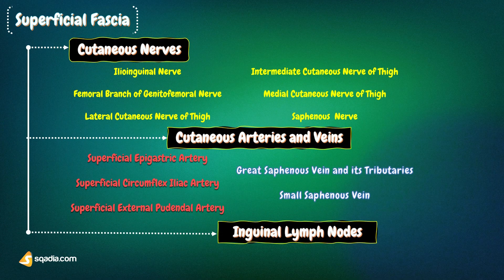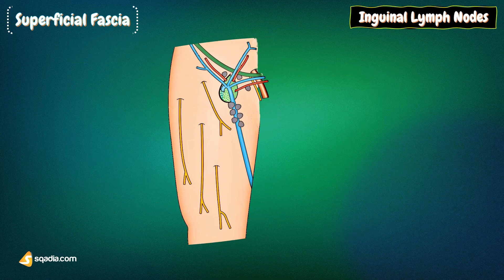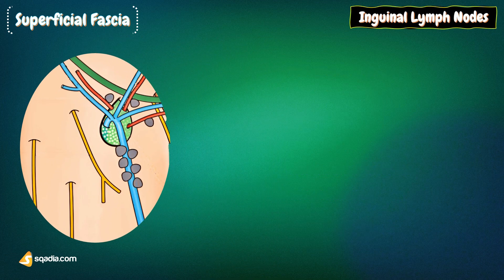So far, we have discussed the cutaneous nerves, arteries, and veins in the region of the thigh. Now let's look at the lymphatic drainage. The lymph nodes present in the region of the thigh are called the inguinal lymph nodes. There is a superficial group and a deep group present within the deep fascia.